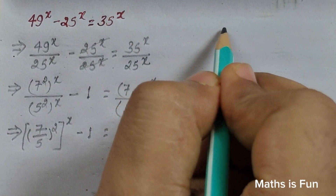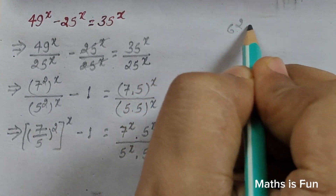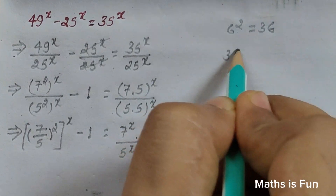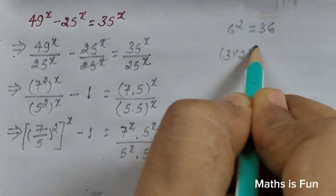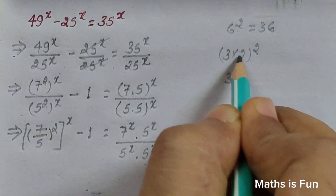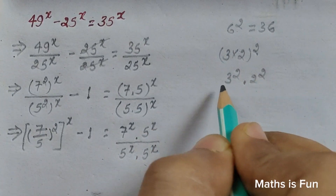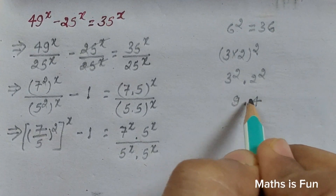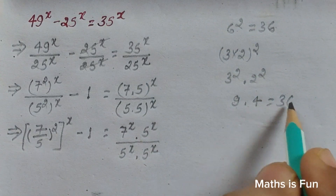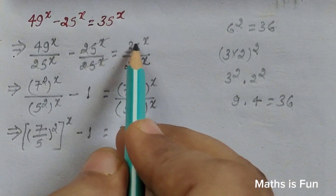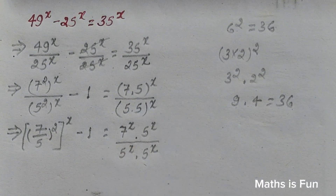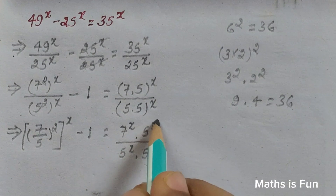To explain this step, consider 6 squared equals 36, because 6 times 6 is 36. We can write 6 as 3 times 2, so 6 squared equals 3 squared times 2 squared, which is 9 times 4, also 36. Similarly, 35 to the power x can be written as 7 to the power x times 5 to the power x. The 5 to the power x terms then cancel.